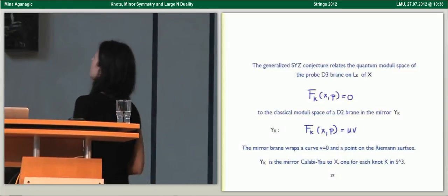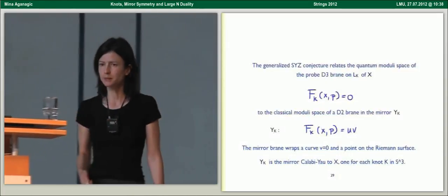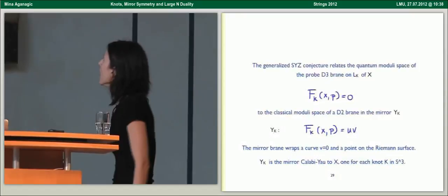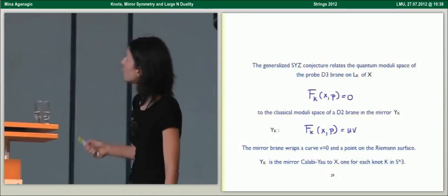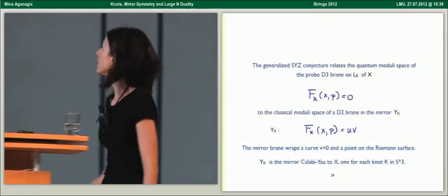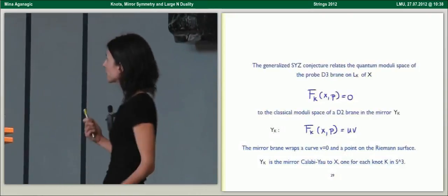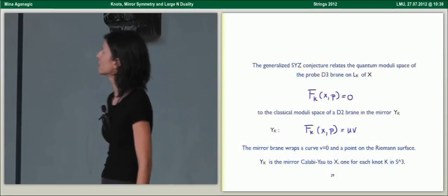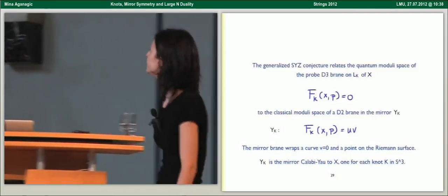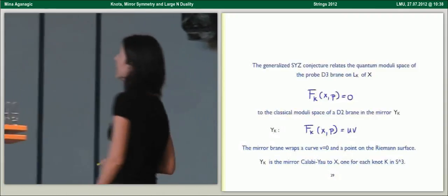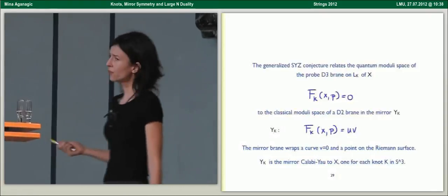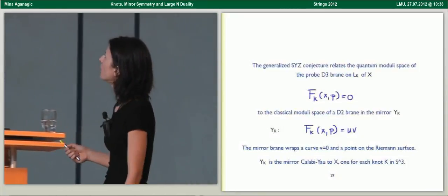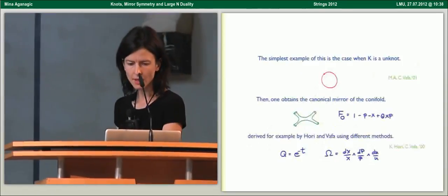The generalized SYZ conjecture would relate the quantum moduli space of the probe D3 brane, which we just computed using Lagrangian duality, to the classical moduli space of a D2 brane in the mirror. The mirror brane wraps a curve given by setting V equals zero and choosing a point on this Riemann surface. In this way, you get a mirror of the resolved conifold, one for each knot in S3, as simply the picture of the geometry of X as seen by this probe D3 brane associated with the knot.